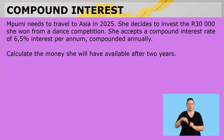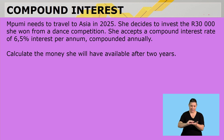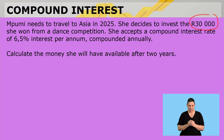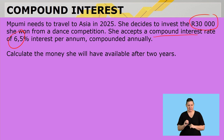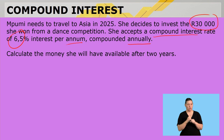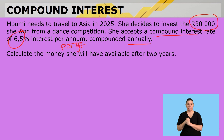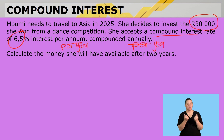Mpumi needs to travel to Asia in 2025. She decides to invest the 30,000 rand she won from a dance competition. She accepts a compound interest rate of 6.5% per annum, compounded annually. Calculate the money she will have available after two years.